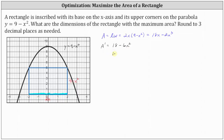This gives us the equation 18 minus 6x squared equals zero. Solving for x, we subtract 18 from both sides, then divide both sides by negative 6. Simplifying, we have x squared equals positive 3. Now we take the square root of both sides.